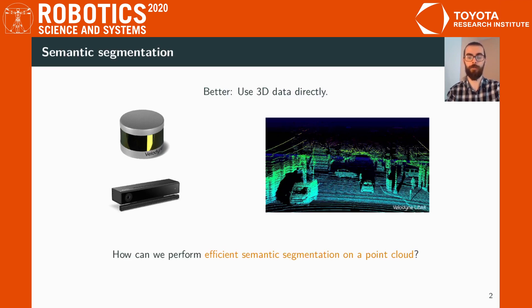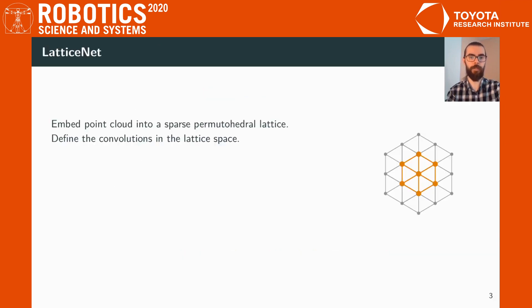However, the question arises, how can we efficiently perform semantic segmentation on a point cloud? Here we propose LatticeNet, a method that embeds the point cloud into a sparse permutohedral lattice and defines the convolutions in lattice space.